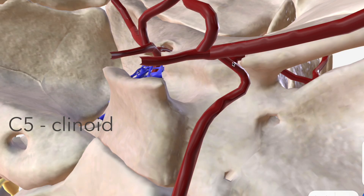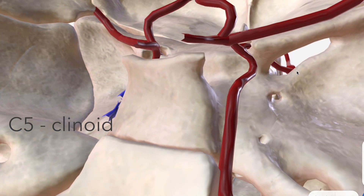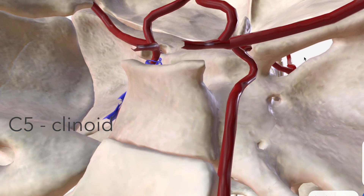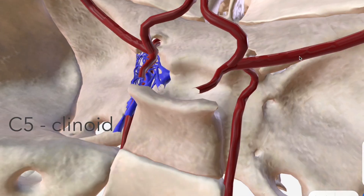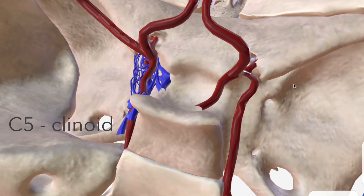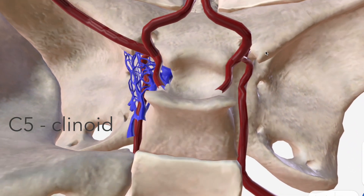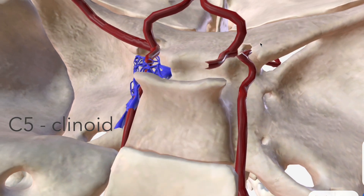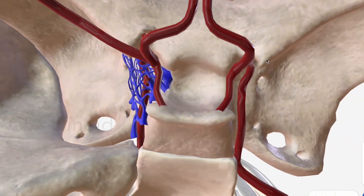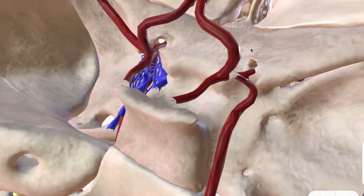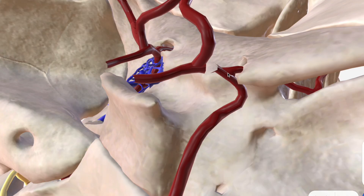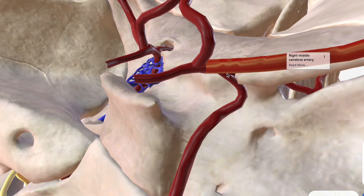C5 is the clinoid segment — a curved little portion just medial to the anterior clinoid process of the sphenoid bone, which is the pointy part of the lesser wing of the sphenoid. This is the clinoid portion of the ICA.